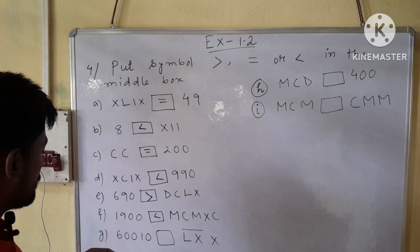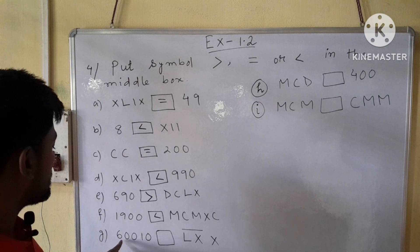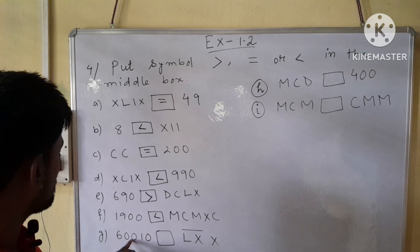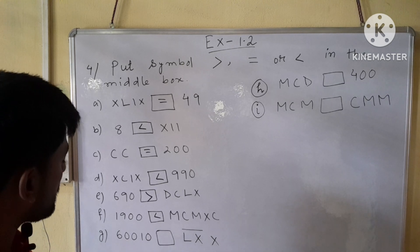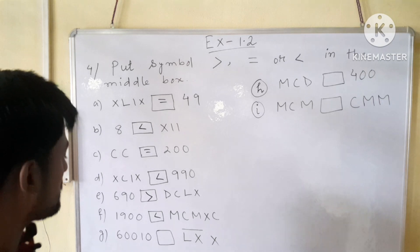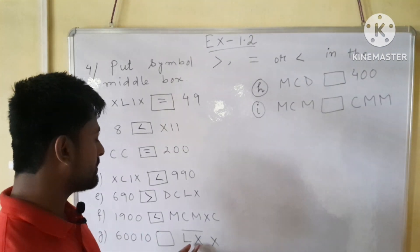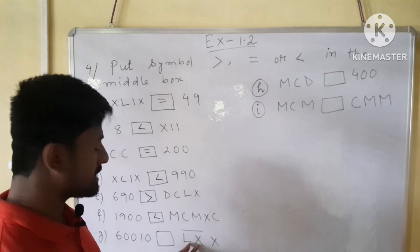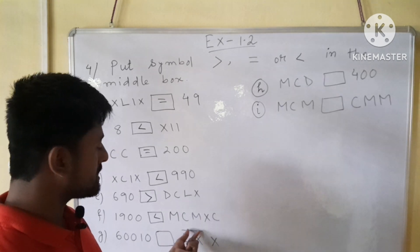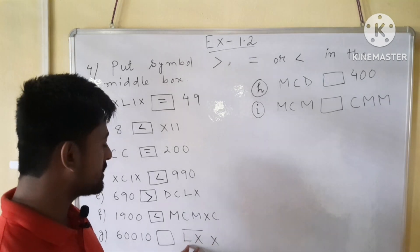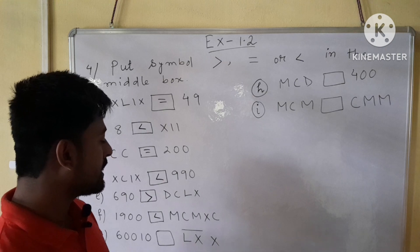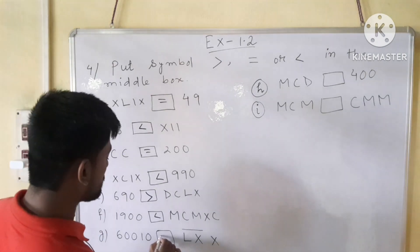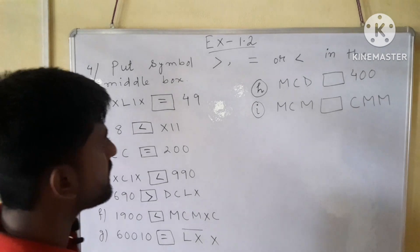Number G: we have 60010 on the left. On the right side of the box we have LX with a bar. LX means 60, and the bar means multiplication by 1000, so it will be 60000 plus 10, giving 60010. So our symbol will be equal.